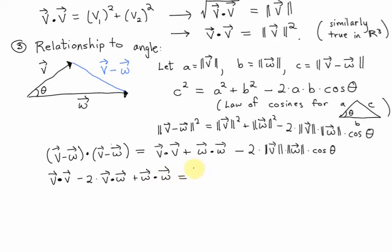Just simplifying the left-hand side, the right-hand side, I'll just carry that down. And you'll notice some things are the same on the left and the right. Specifically, I can cancel out a V dot V and a W dot W.